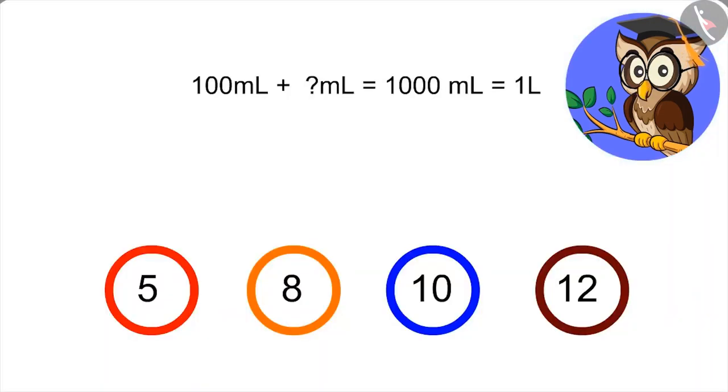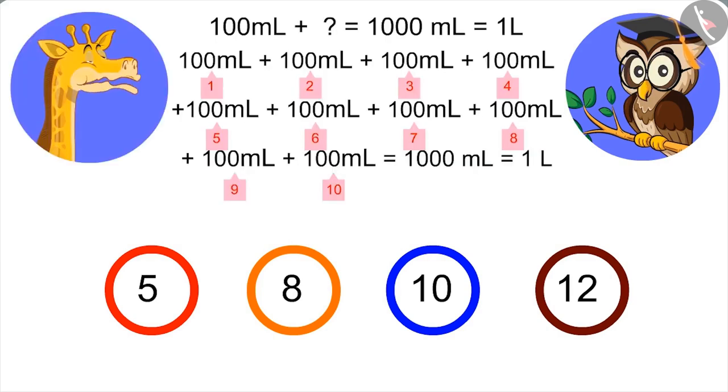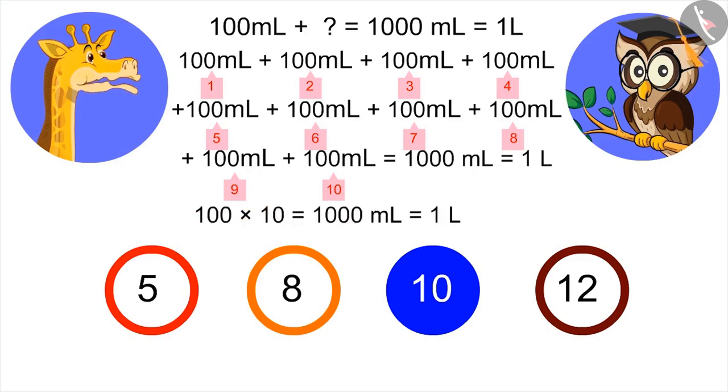Now tell, how many 100 ml will add up to 1 litre? Adding 100 ml up to 10 times makes 1000 ml. Means 10 multiplied by 100 ml gives 1 litre.